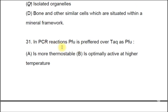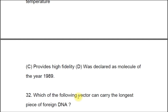Question 31: In PCR reactions, Pfu is preferred over Taq because Pfu A) is more thermostable, B) is optimally active at high temperature, C) provides high fidelity, D) was declared molecule of the year 1989. The correct answer is C, it provides high fidelity as it has 3-prime to 5-prime exonuclease activity.